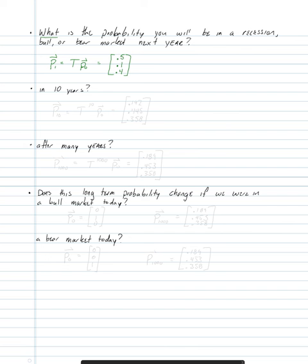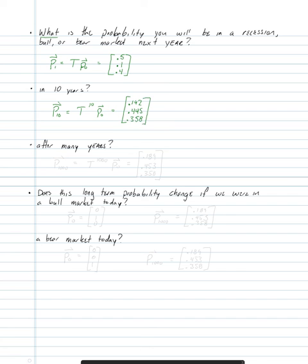The next question asks about 10 years from now. We compute p10 using the analytic solution from this section: p10 equals the transition matrix multiplied by itself 10 times, then multiplied by the initial probability vector. The result is the column vector [0.192, 0.445, 0.358], meaning a 19.2% chance of recession, a 44.5% chance of bull market, and a 35.8% chance of bear market in 10 years.